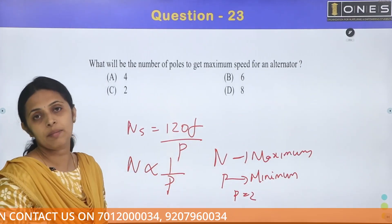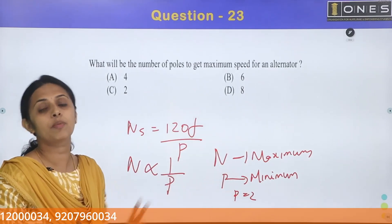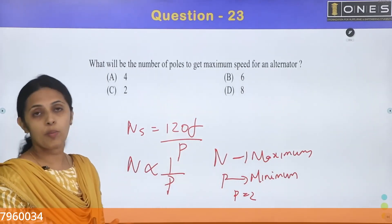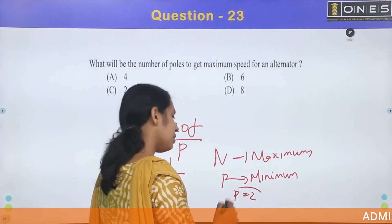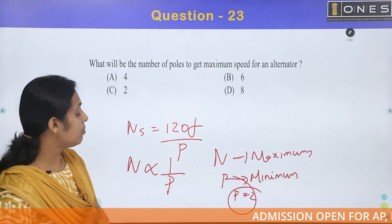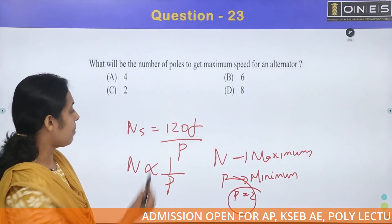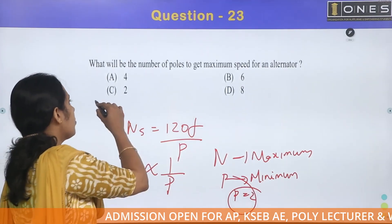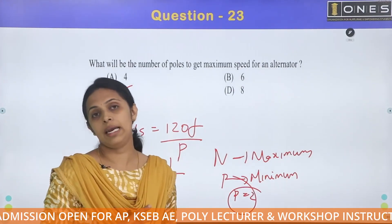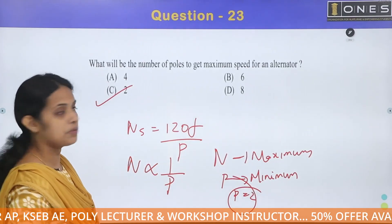We don't have a monopole — if one is a north pole, there must be a south pole. So the minimum number of poles is 2. The minimum number of poles gives maximum speed. The minimum poles will be 2. The option is C.